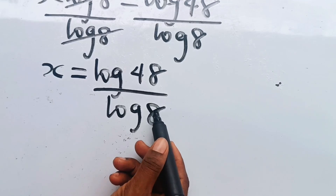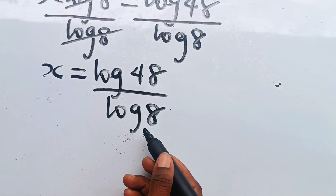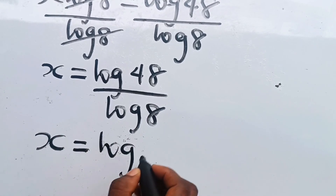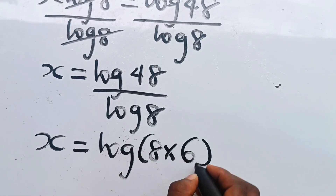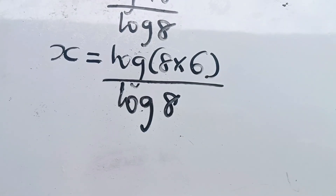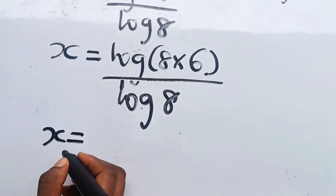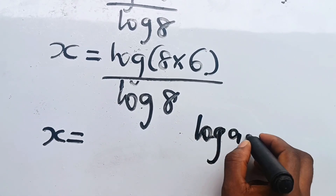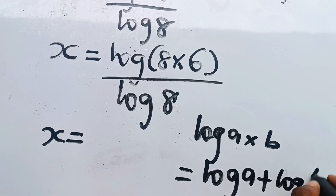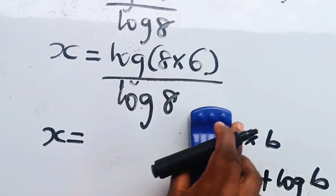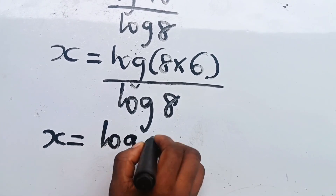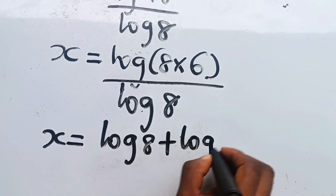Now we need to express log 48 in terms of log 8. We know that 8 times 6 gives us 48, so we can write x is equal to log(8 × 6) divided by log 8. Then we can write that log(8 × 6) equals log 8 plus log 6, so x is equal to log 8 plus log 6, all divided by log 8.